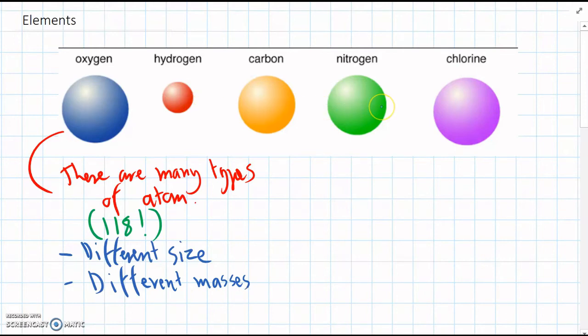We can see up here in this simple picture we've got hydrogen atoms. These are the smallest atoms. Then we've got oxygen and chlorine. These atoms are a bit bigger as well.